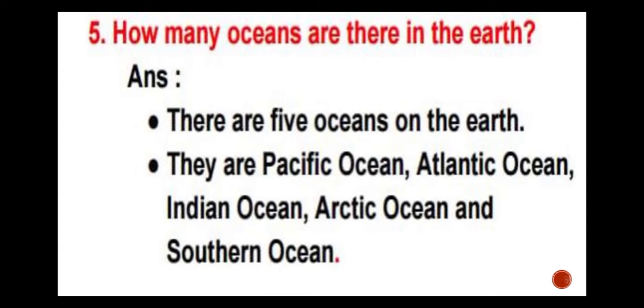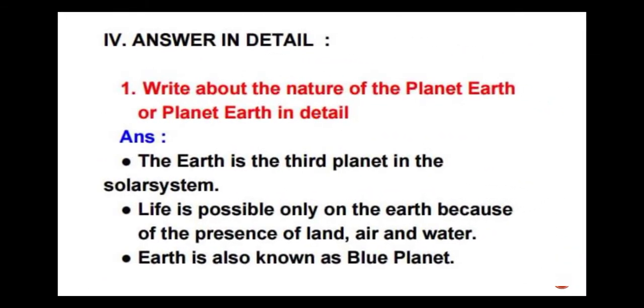The next exercise: answer in detail. The first question: write about the nature of the planet earth or planet earth in detail. Answer is the earth is the third planet in the solar system. Life is possible only on the earth because of the presence of land, air and water. Earth is also known as blue planet.